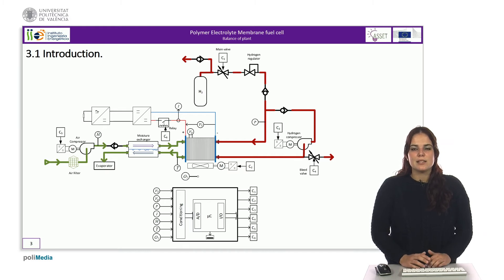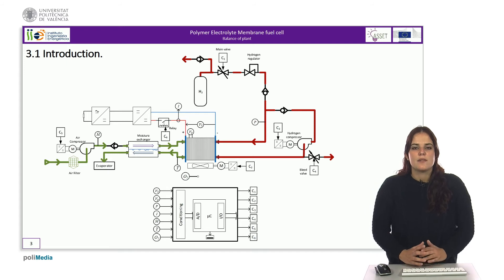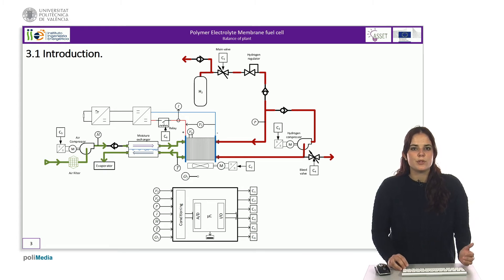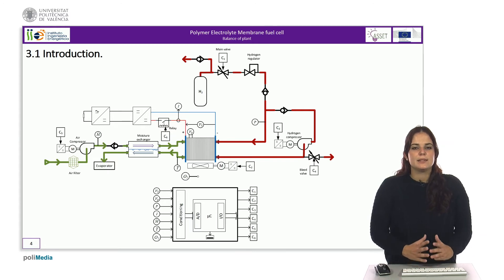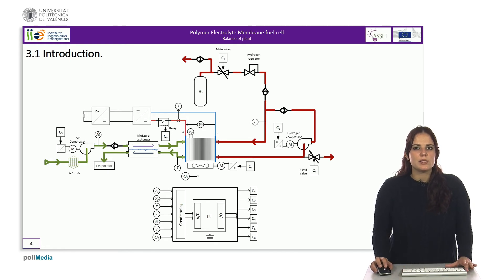The air inlet must have at least one particle filter. In addition, the humidity of the membrane in this type of fuel cell is very important. Therefore, the incoming air passes through a humidity exchanger from the outgoing air, which is heated and charged with the water produced inside the stack. The temperature of the air leaving the stack is a reflection of the temperature of the membrane. The temperature must be kept below 90 degrees Celsius, because at 100 degrees Celsius the membrane can be damaged. Measuring this temperature allows the control system to decide whether to activate the cooling system or not.